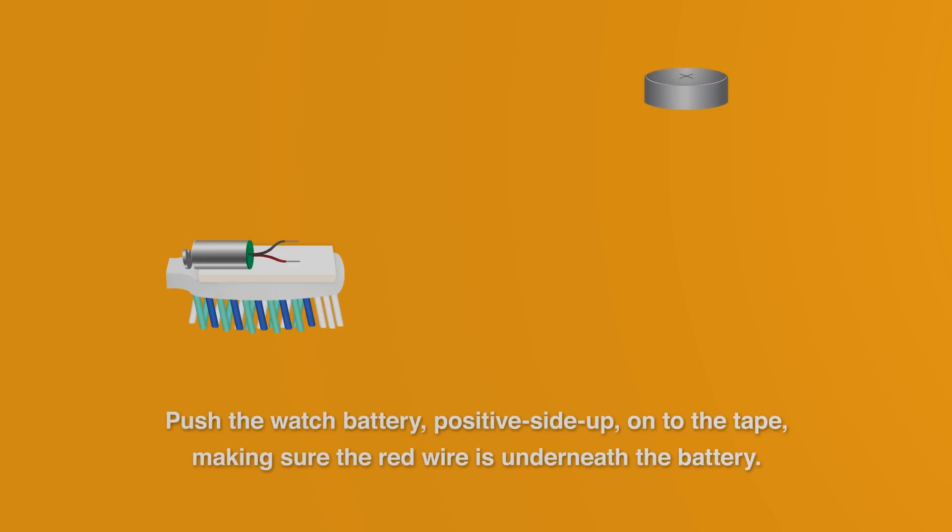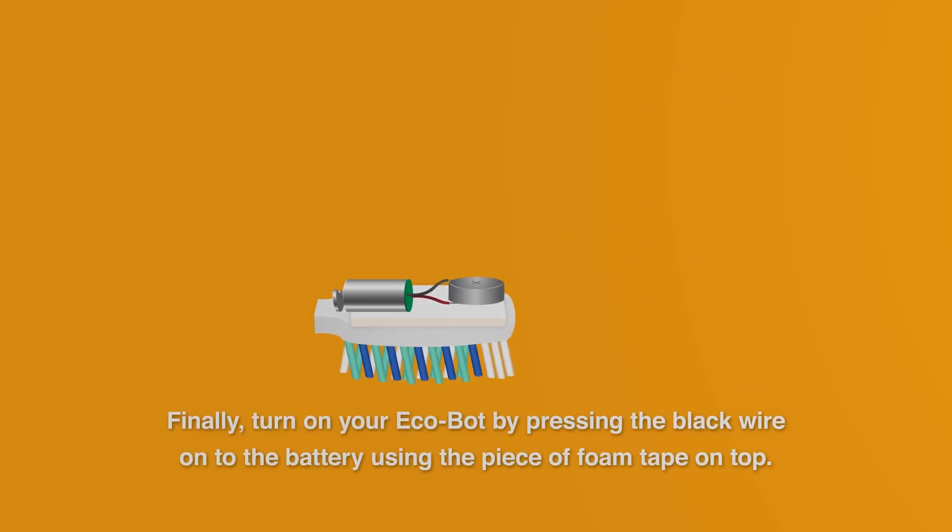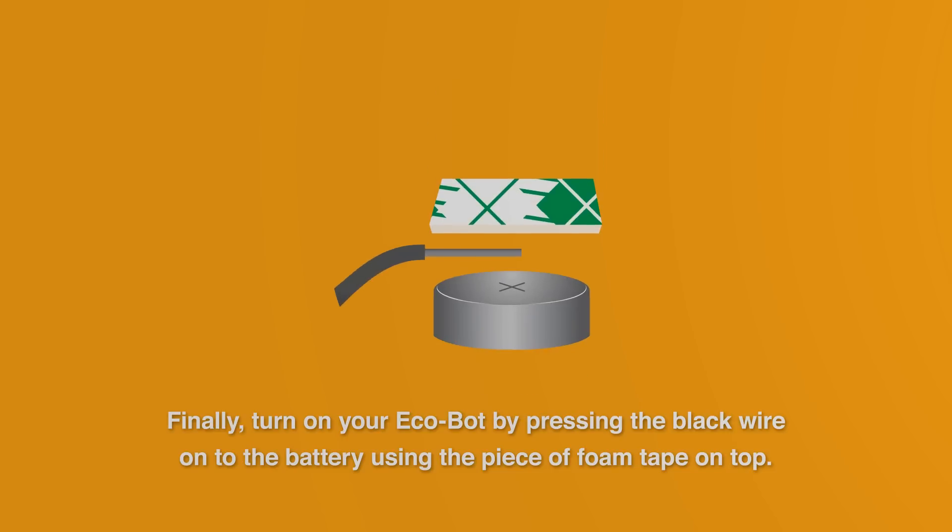Next, push the watch battery, positive side up, onto the tape, making sure that the red wire is underneath the battery. Finally, turn on your Ecobot by pressing the black wire onto the battery, using a piece of foam tape on top.